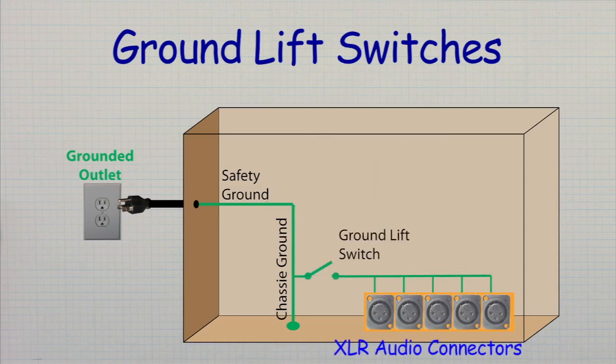Better designs use a ground lift switch to disconnect the pin one ground on the balanced XLR connector, thus isolating the safety ground from the ground of the equipment connected to it through the balanced line.